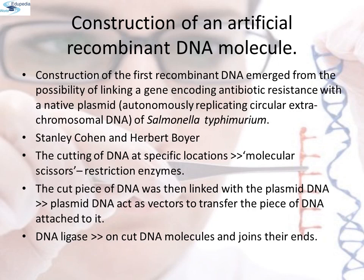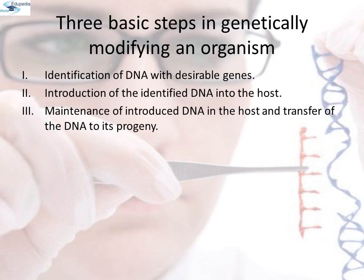When these were transferred into E. coli, a bacteria closely related to Salmonella, it could replicate using the new host DNA polymerase enzyme and make multiple copies. The ability to multiply copies of antibiotic resistance genes in E. coli was called cloning of antibiotic resistance genes in E. coli. The three basic steps in genetically modifying an organism are: identification of DNA with desirable genes; introduction of the identified DNA into the host; and maintenance of introduced DNA in the host and transfer of the DNA to its progeny.